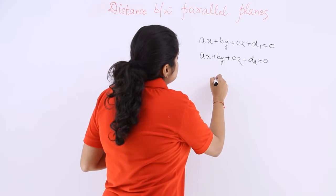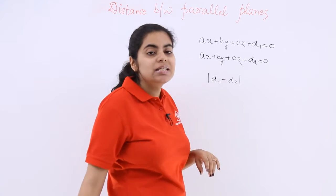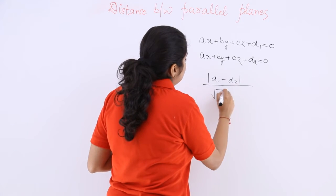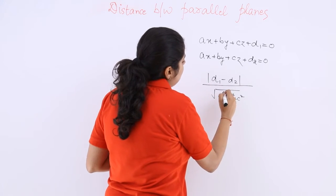And what is the distance between these planes? Since the distance is always positive, so let's take modulus d1 minus d2 whole over root of a squared plus b squared plus c squared.